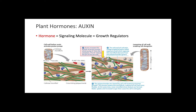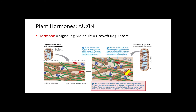How does auxin promote plant growth? Auxin increases the activity of hydrogen pumps, therefore reducing the pH of the cell wall. A low pH causes expansins to separate microfibrils, shown in brown, and polysaccharides, shown in green. These polysaccharides are cleaved by loosening enzymes in the cell wall, and the loosening of microfibrils and increased water uptake increases turgor and causes the cell to elongate.